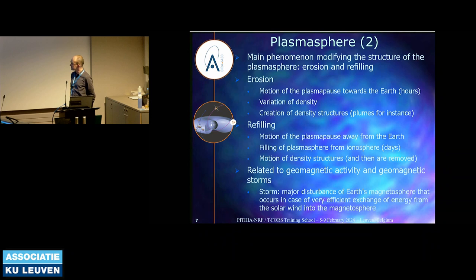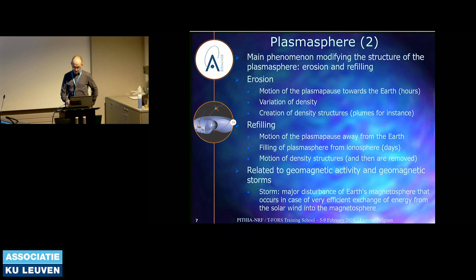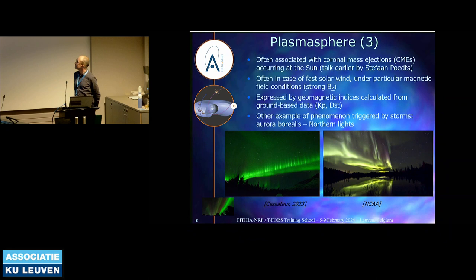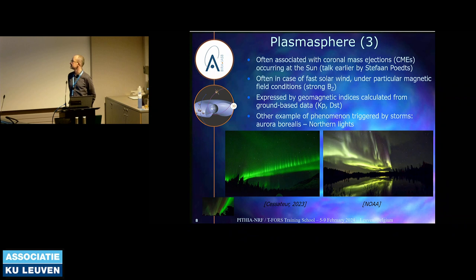These two phenomena and activity changes in the plasmasphere are directly related to geomagnetic activity coming from the sun — what we call geomagnetic storms. A storm is a major disturbance of Earth's magnetosphere that occurs in case of efficient exchange of energy from the solar wind into the magnetosphere. It's often associated with coronal mass ejections occurring at the sun. These storms are often occurring in case of fast solar wind and under particular magnetic field conditions with a strong negative Bz component.